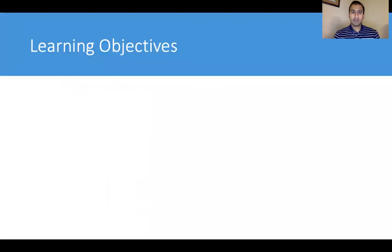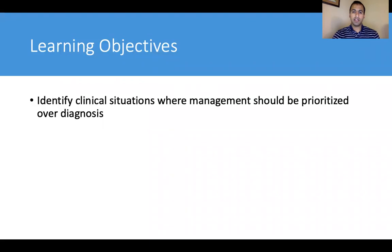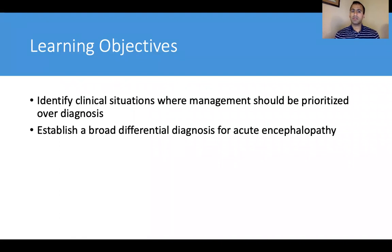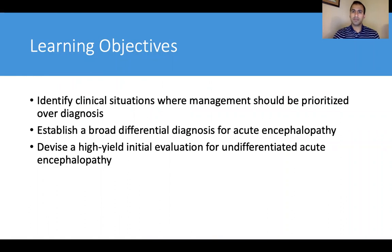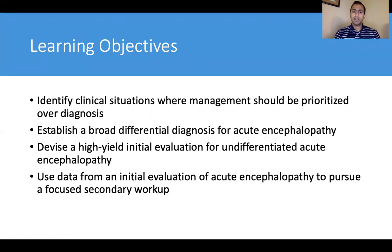For this talk, we have a couple of learning objectives. First, by the end of this talk, I would like you to be able to identify clinical situations where management should be prioritized over diagnosis. Second, I would like you to establish a broad differential diagnosis for acute encephalopathy. Third, devise a high-yield initial evaluation for undifferentiated acute encephalopathy. And last, use data from an initial evaluation to pursue a focused secondary workup.